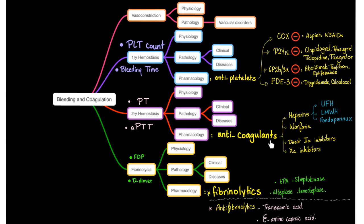To affect secondary hemostasis, use anticoagulants — again four groups: heparins, warfarin, direct thrombin inhibitors such as argatroban, and factor Xa inhibitors. For fibrolysis: if you want to stimulate it, use fibrinolytics such as TPA, streptokinase, alteplase, and tenecteplase. If you want to inhibit fibrolysis, use antifibrinolytics such as tranexamic acid and epsilon aminocaproic acid.